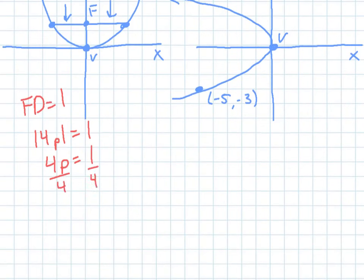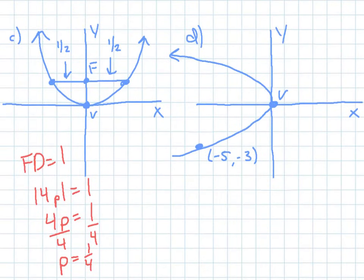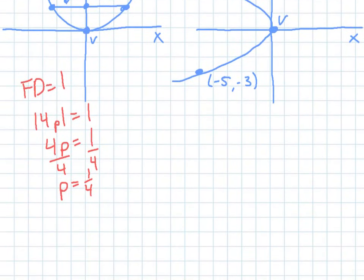So first I want to find p. So I divide both sides by 4. Now, your p is going to be positive because looking at my graph, it's opening up. So that means that p is positive in those positions. So now I want to go to the equation that makes sense for this one as well because it's opening up. That means x is going to be squared.